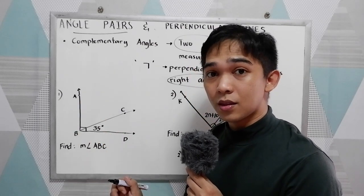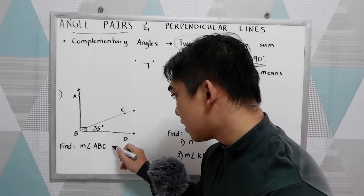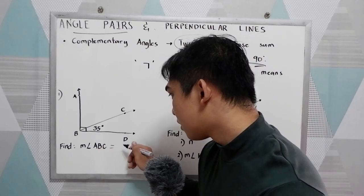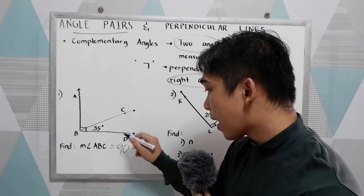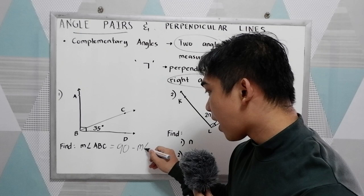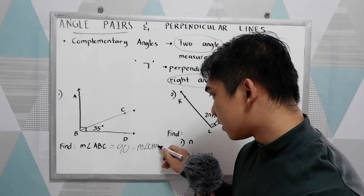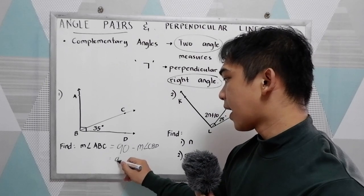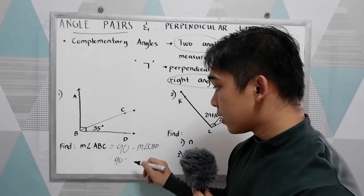Now to get measure angle ABC, we just need to substitute. To get measure angle ABC, 90 minus measure of angle CBD. And 90 minus measure angle CBD is 35.